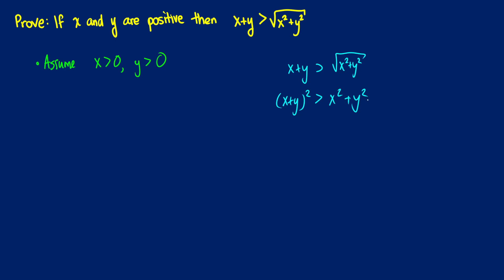So now we can factor at least. That's going to be x squared plus 2xy plus y squared is greater than x squared plus y squared. So we can do some subtraction because x squared plus y squared appear on both sides. That tells us that 2xy is greater than 0.